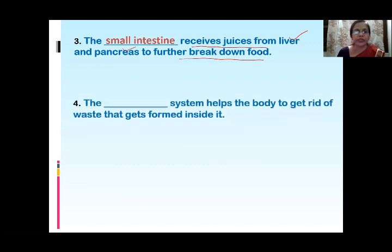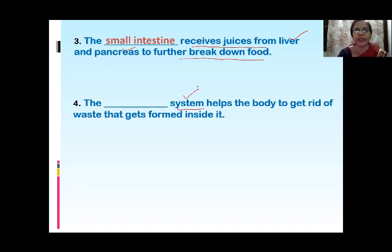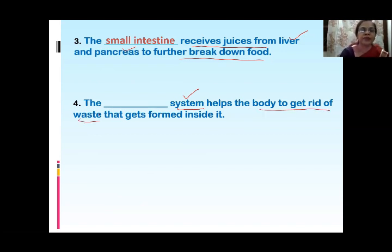Next question: Dash system helps the body to get rid of waste that gets formed inside it. It is asking for a system — not an organ — the system which helps the body to get rid of waste formed inside our body. The answer will be the excretory system.